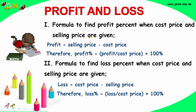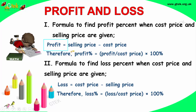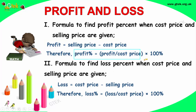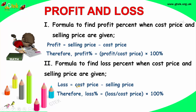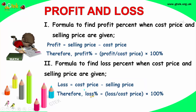If we talk about the formulas: the formula for profit percentage is, when the cost price and selling price are given, profit equals selling price minus cost price, and the profit percentage is profit divided by cost price into 100. Whereas the formula to find the loss percentage is: loss equals cost price minus selling price, and the loss percentage is loss divided by cost price into 100. That's the difference.